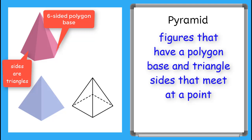And the sides are all triangles that meet at a point. But when you hear the word pyramid, you might think about the Egyptian pyramids. Those are square pyramids. So instead of a six-sided base, they have a four-sided base.